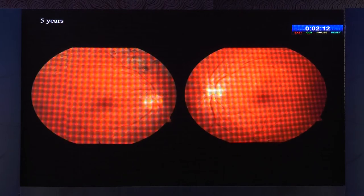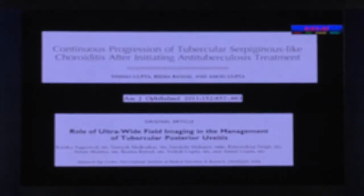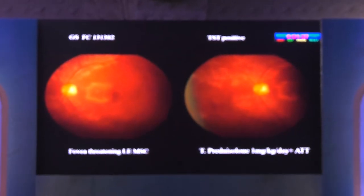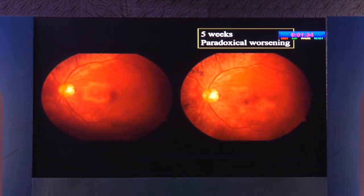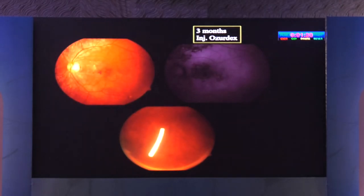At five years the patient is following up. This is the final outcome — both eyes lasered very well. The repeat angiogram at five years shows complete scatter laser photocoagulation with no leakage in the left eye, and all NVEs resolved in the right eye. Another challenge is paradoxical worsening in serpiginous choroiditis — this was a macular fovea-threatening lesion started on oral steroids with anti-TB therapy. At five weeks there was paradoxical worsening, which responded very well to intravitreal ozurdex, a useful adjunct in these patients.